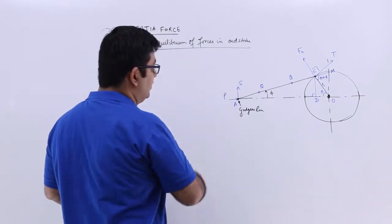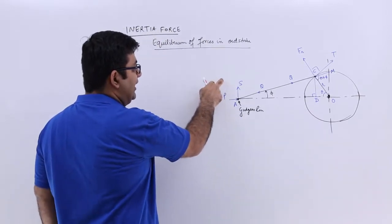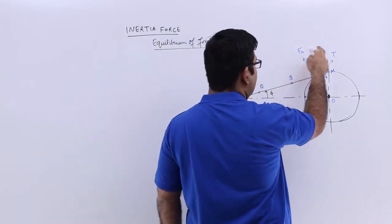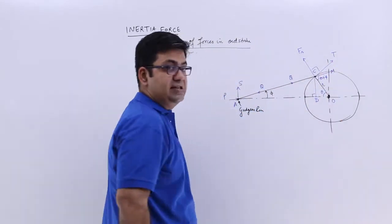This is the crank of radius R. So there are certain terms given to you like P, S, Q, F, R, T, and you have all these angles given to you.